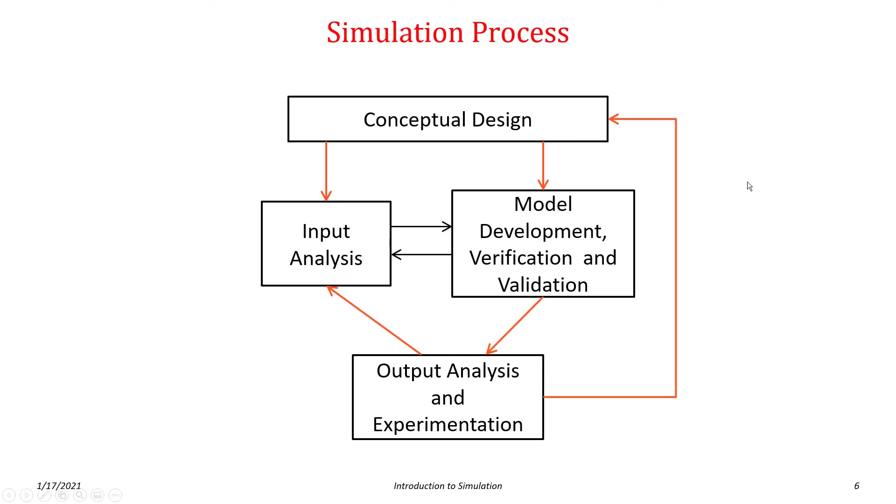So the process that we have for doing simulation involves these four basic steps. We have conceptual design step, where we're conceptualizing how we'd like the model to operate. We have what's called input analysis, where I'm looking at the actual system and I'm doing things like, if you think about our food truck, I'm trying to characterize the arrival process of customers or trying to characterize the cooking process or the meal preparation process so that I can build the corresponding computer model. We have the actual model development, which you think about as using computer software to create the model. Verification and validation involve assessing the correctness of the model. And then finally, we have output analysis and experimentation, where I'm actually using the model to perform analysis steps and then making decisions about optimization or system improvement or things like that.